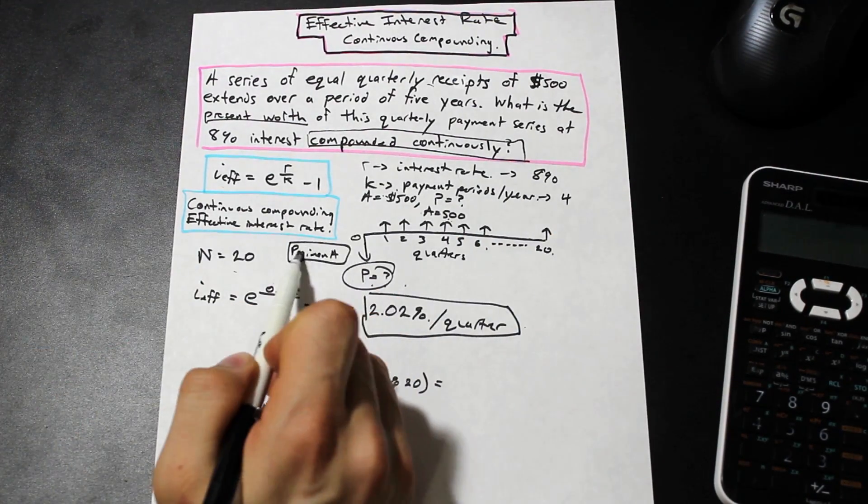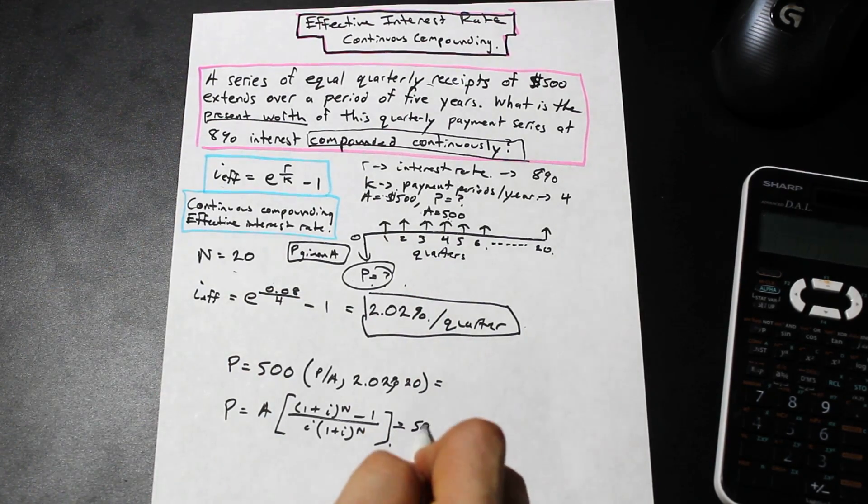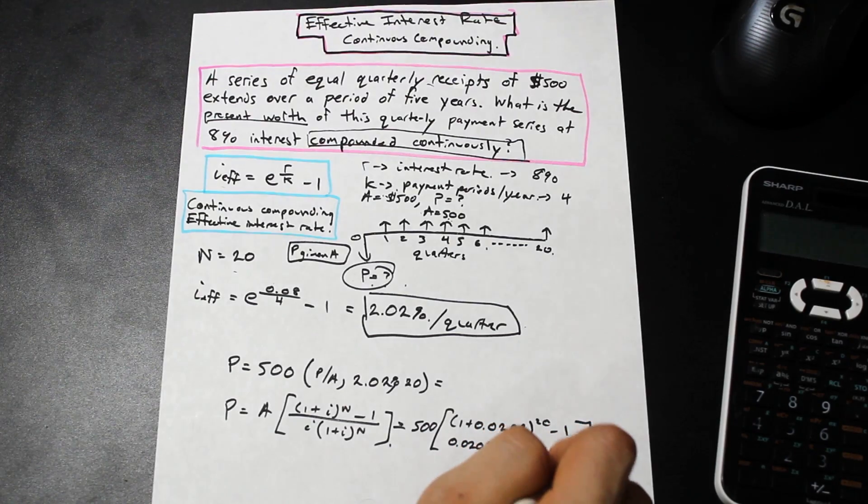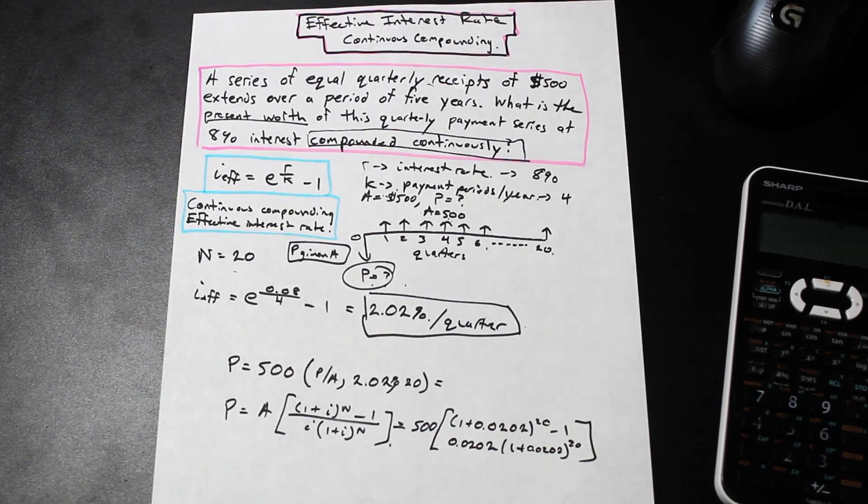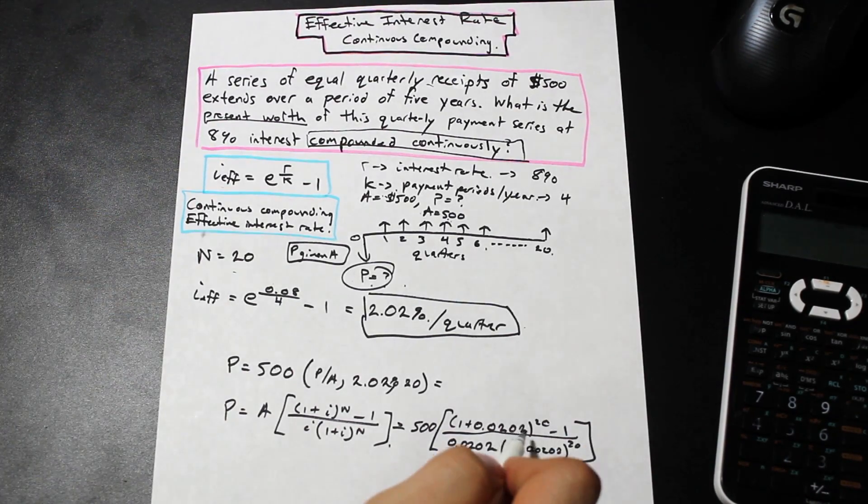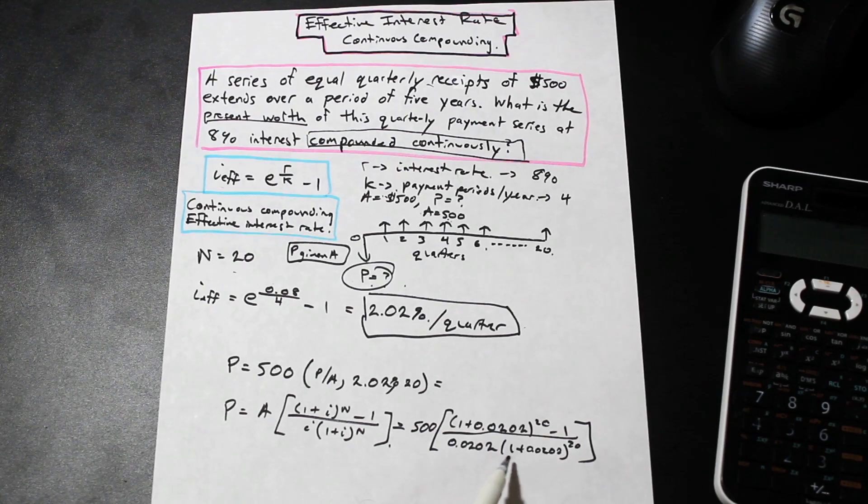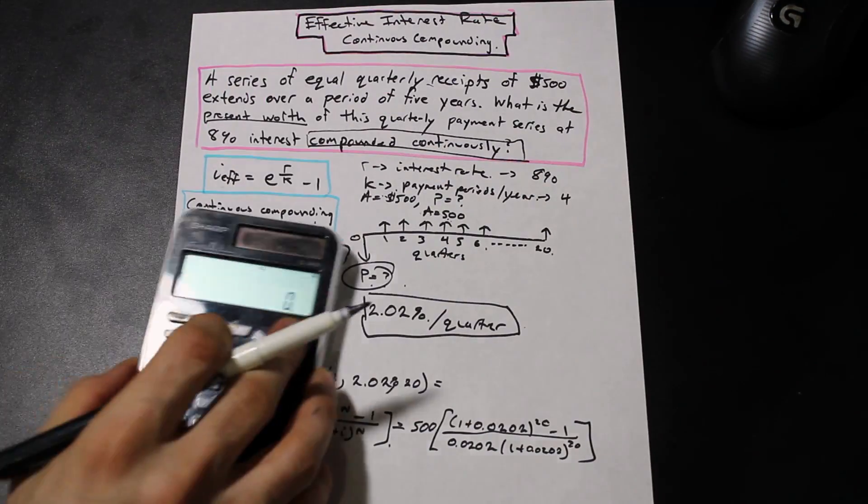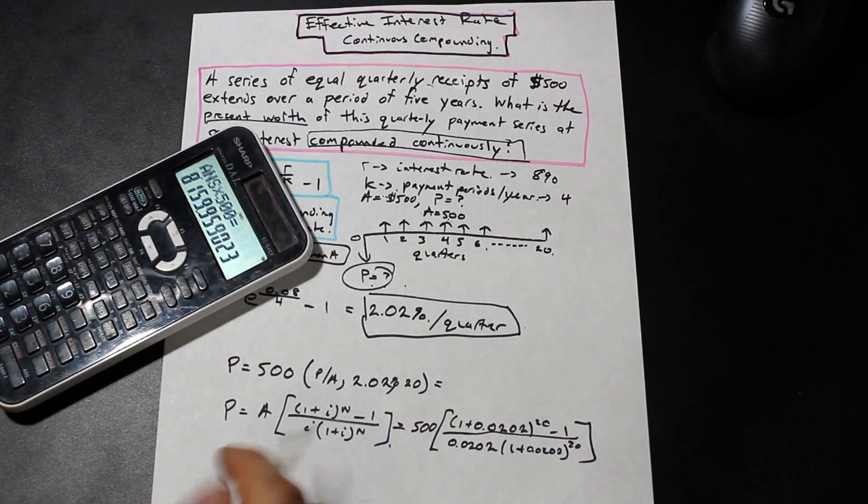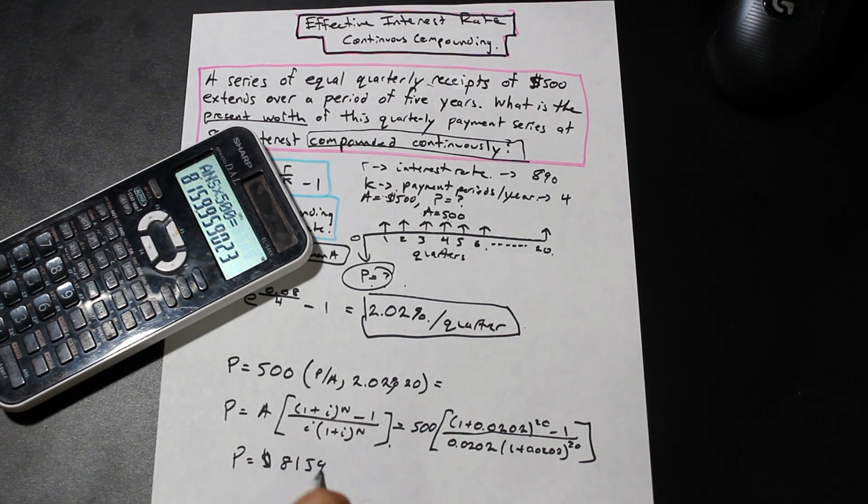So we have 1 divided by - so we have 1 plus 0.0202, you have to divide by 100 when you put it into the formula for the interest rate, to the power of 20 minus 1, and the bottom of the fraction is 0.0202 times 1 plus i to the n. And if we put that in our calculator, we're going to get a value for our present value of this equal payment series of $8159.96.